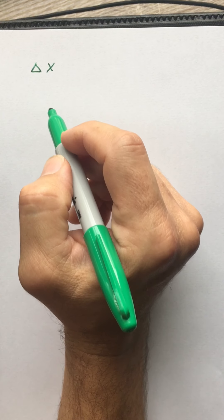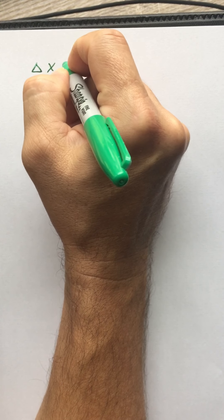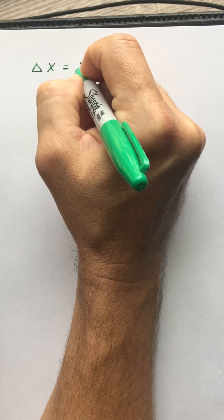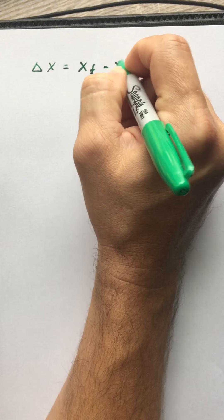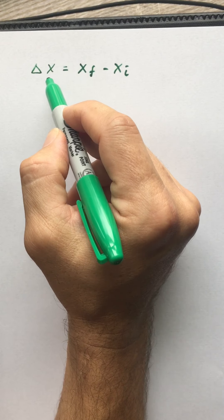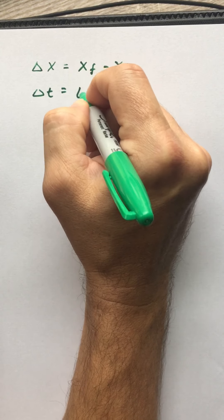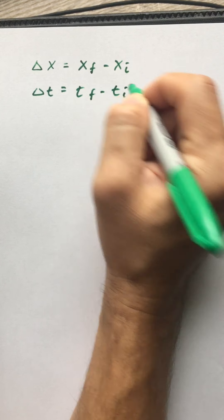So we've seen a couple things. We've seen the idea of a change in position which we call a displacement. This is going to be some final position minus the initial position. Doing this with regards to time, of course, it's t final minus t initial.